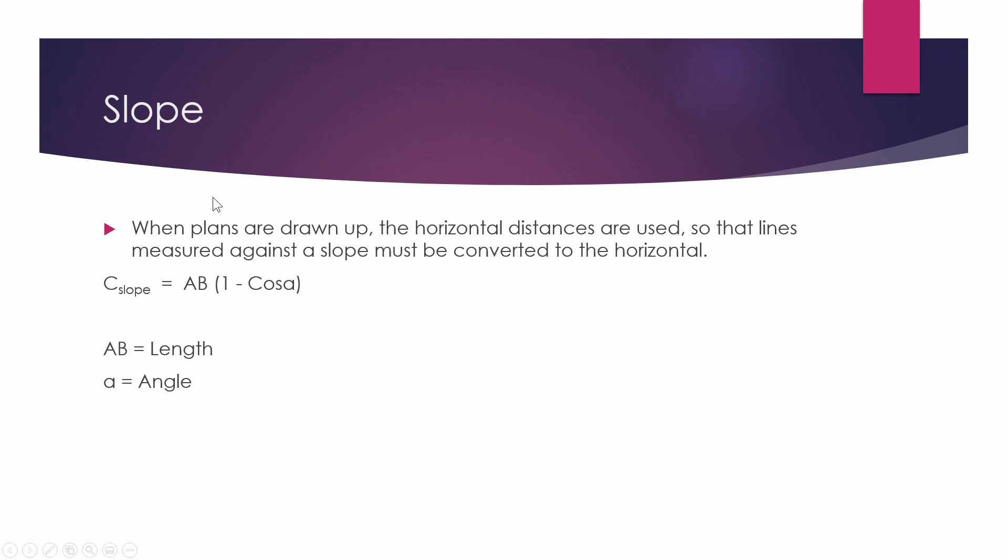For your slope, there's another correction we have. This also just has two variables, AB which is the length, that's the same as the distance in the previous calculation, and your alpha, which is your angle, which is in degrees, minutes and seconds.